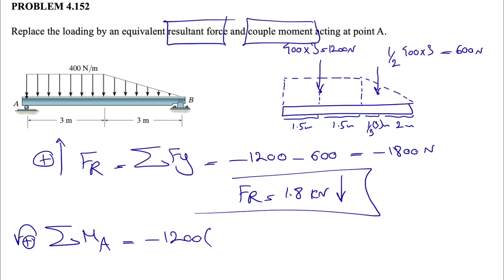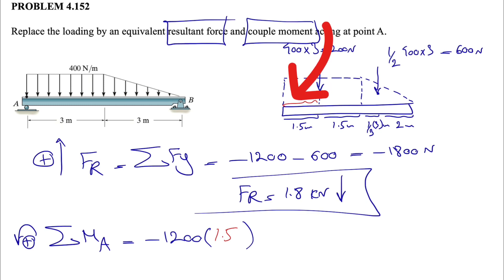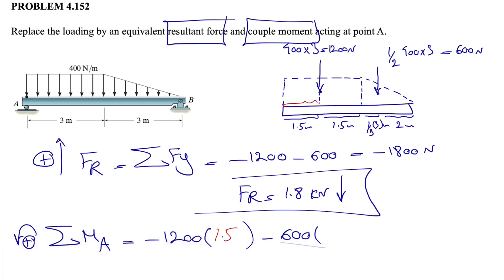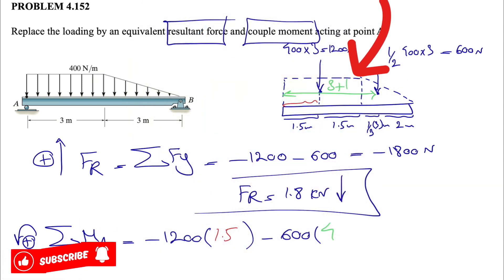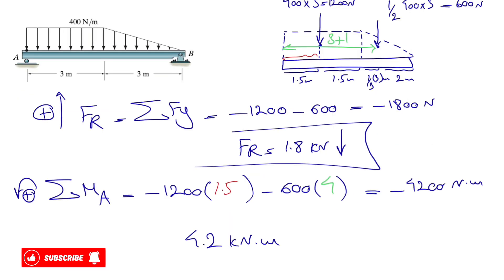The distance for the 1200 N force from point A is 1.5m — shown here in red — which is the half-length of the rectangle. For the 600 N force, since its moment is also clockwise, we again use a negative sign. The distance, shown in green, is from point A to where that force applies, which is three plus one, giving us four meters.